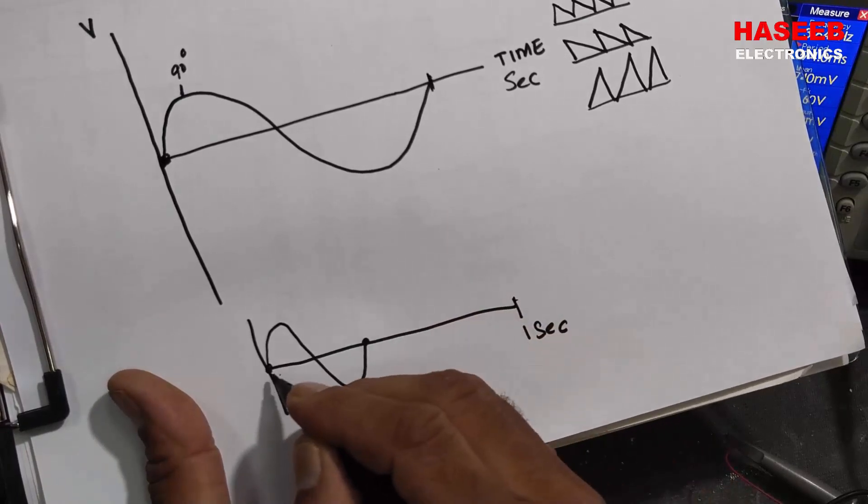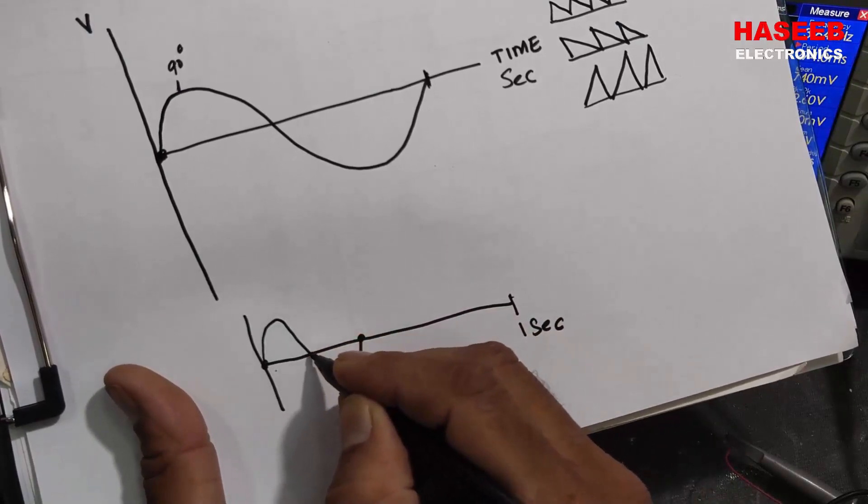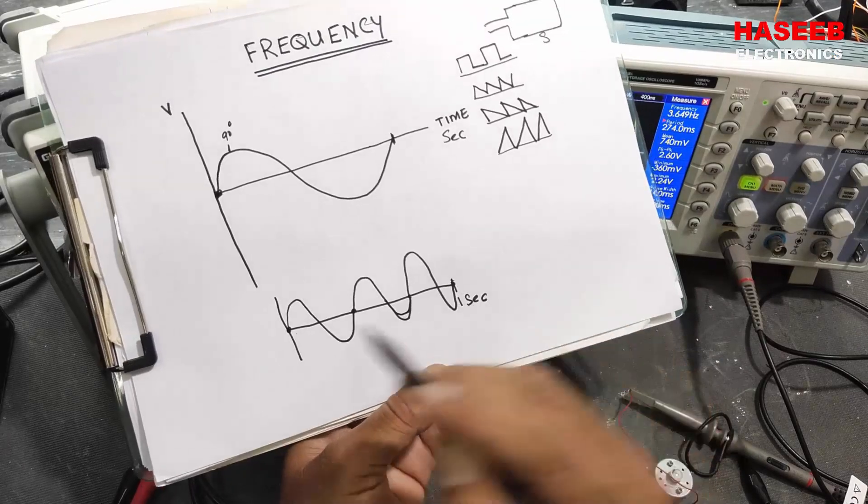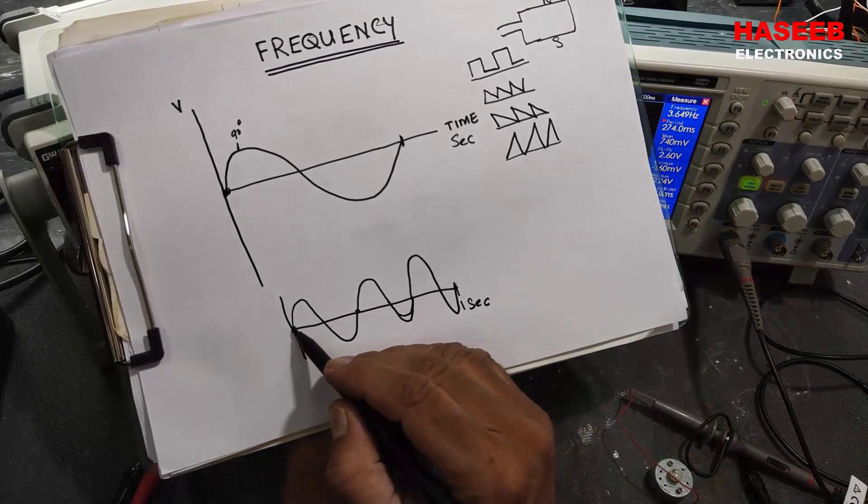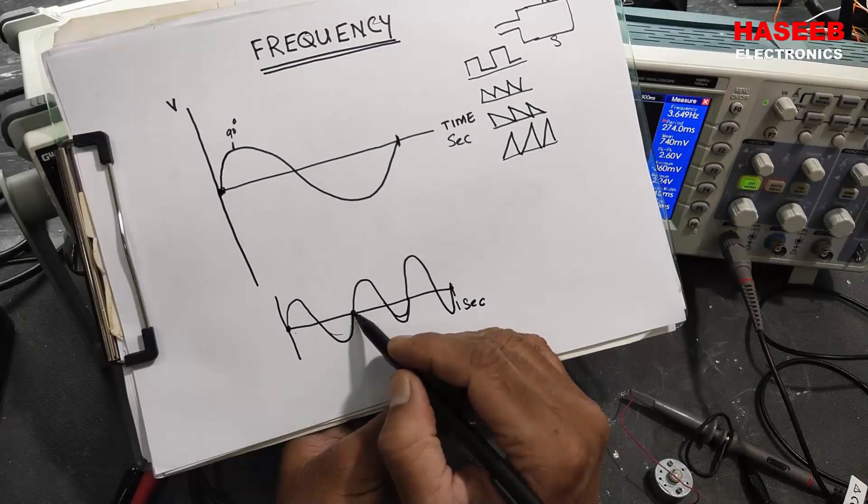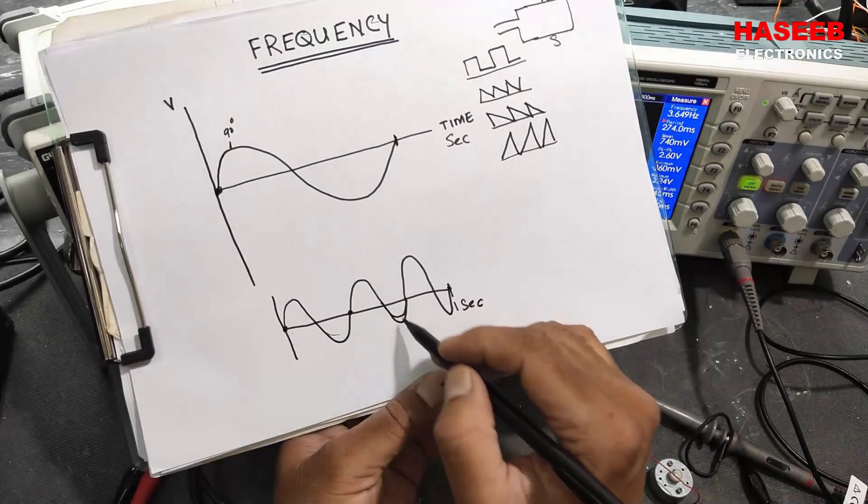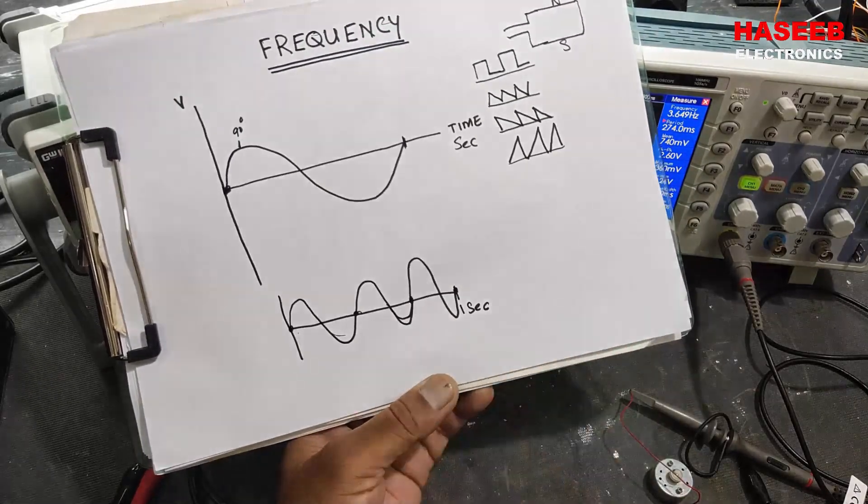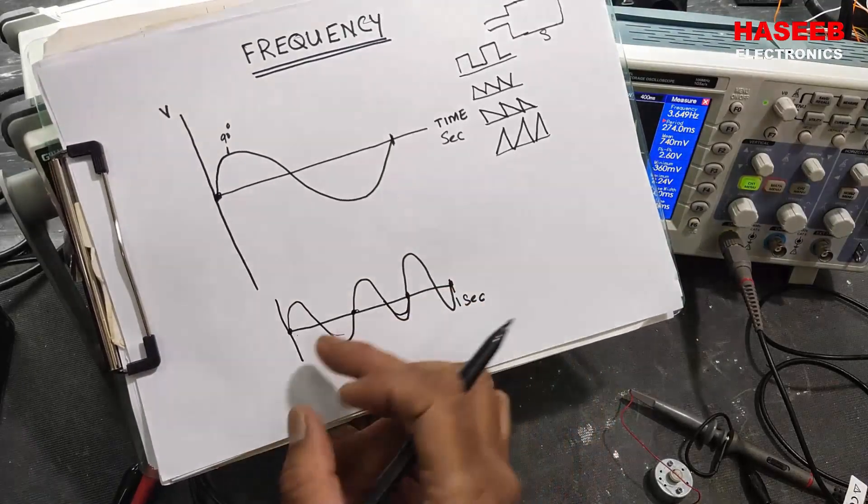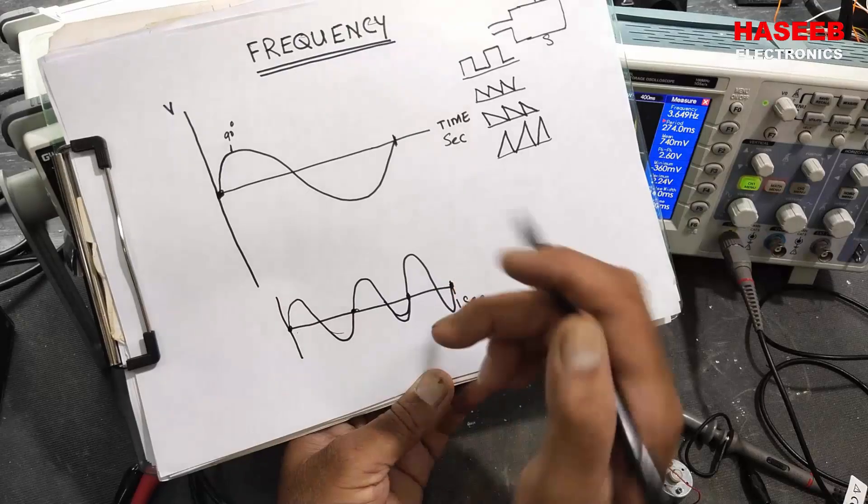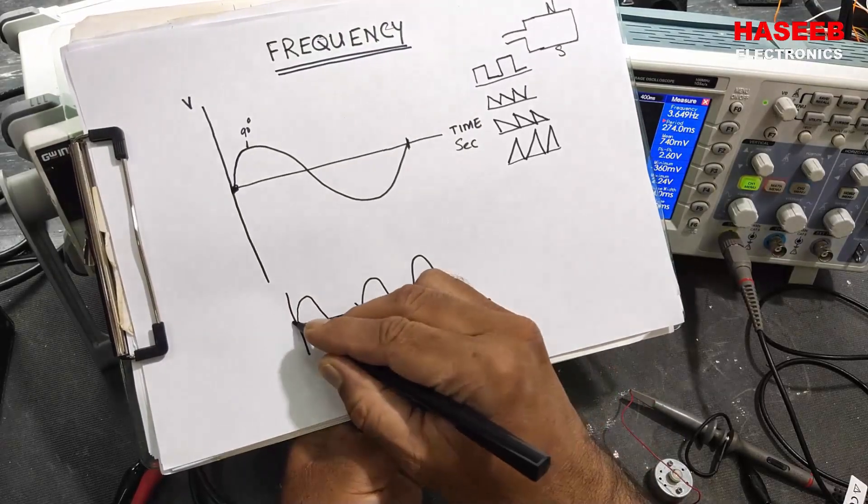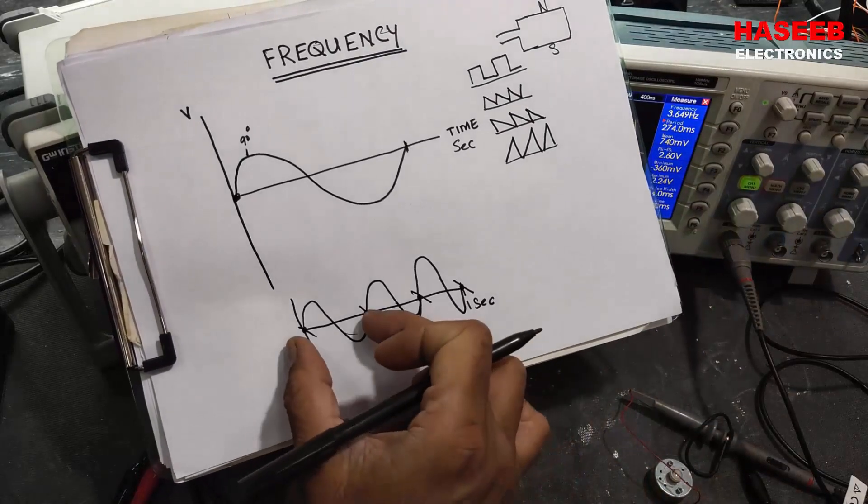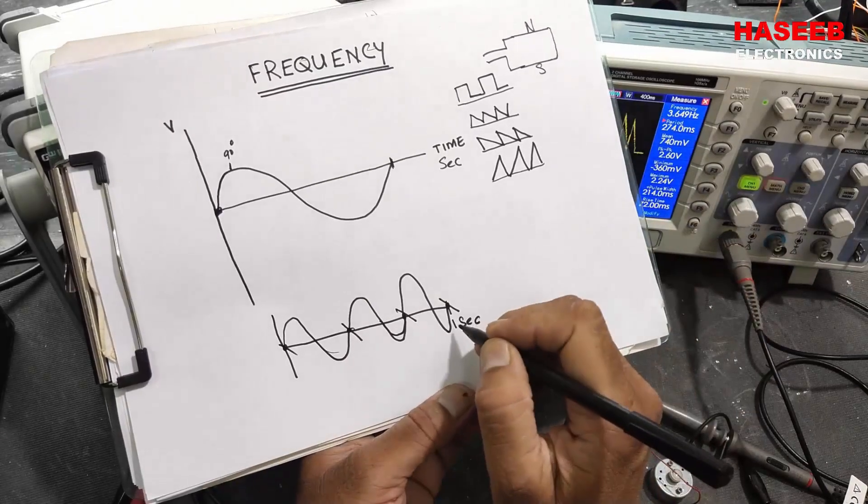Because it is zero degree, when it is coming back from positive peak it is called 180 degrees. Two, three in one second. We started from here - one. It is a complete rotation from this point to this point - complete rotation. Three rotations, so we completed one, two, three. One cycle, two cycles, three cycles. We completed one, two, three cycles in one second.